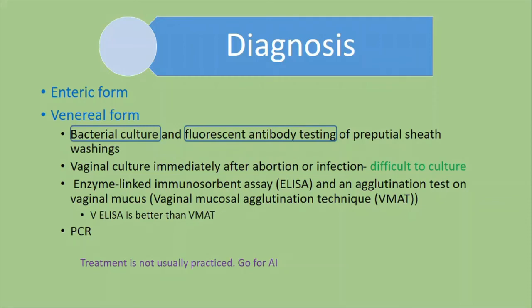For diagnosis of campylobacteriosis — whether enteric or venereal form — the gold standard is bacterial culture. In bulls, fluorescent antibody testing of preputial sheath washings can be used. In cows, vaginal culture can be performed, ideally immediately after abortion or infection, though culture can be difficult. Other methods include ELISA and the vaginal mucus agglutination test (VMAT). VELISA is considered better than VMAT. PCR is also available.